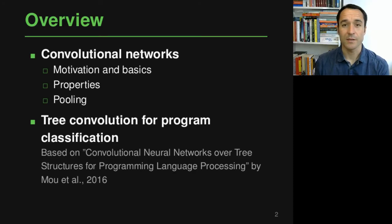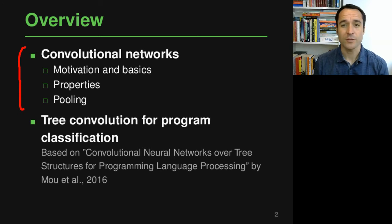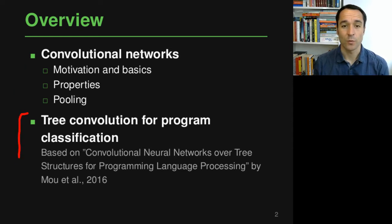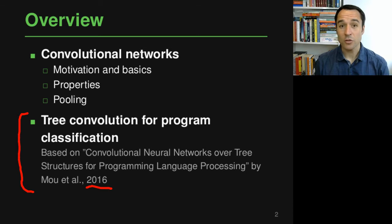As for most of these lectures, I'll start by giving an overview of the neural network architecture we want to talk about — convolutional networks. I'll introduce what they are, why they make sense, and what their properties are. Then in the second part of this lecture we look into one specific application of convolutional networks for program classification, based on a paper published a couple of years ago that has had some impact. Feel free to look into that paper for details we cannot cover here.